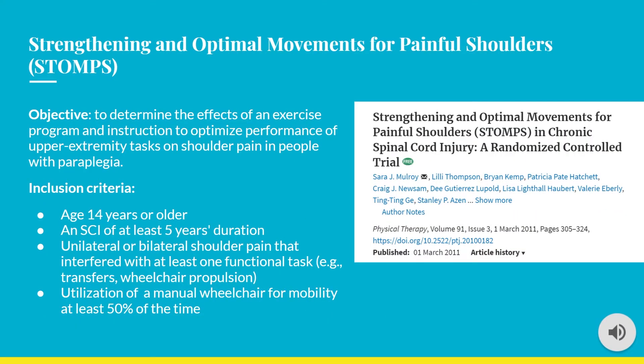For our first intervention study, we have the STOMPS RCT from Mulroy et al. in 2011. The objective of the Strengthening and Optimal Movements for Painful Shoulders trial was to determine the effects of an exercise program and instruction to optimize performance of upper extremity tasks on shoulder pain in people with paraplegia. Subjects needed to be older than 14 years old, had sustained an SCI of five years duration, had unilateral or bilateral shoulder pain interfering with functional tasks, and utilized a manual wheelchair for over 50% of mobility.